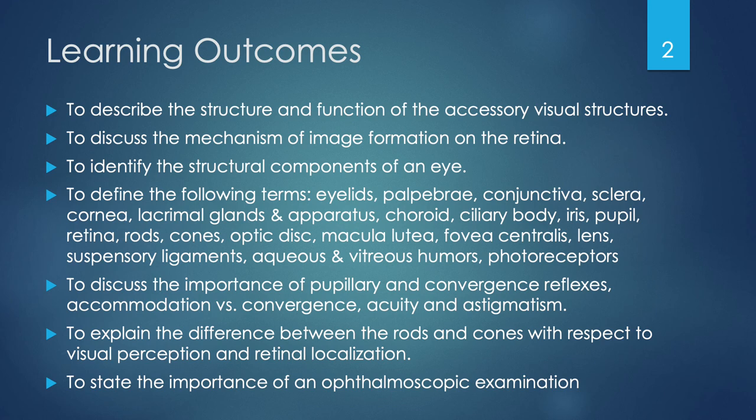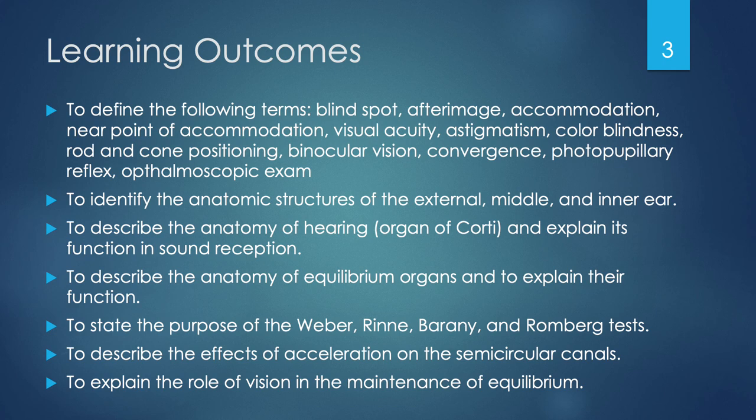Also, to discuss the importance of pupillary and convergence reflexes, to discuss accommodation versus convergence, acuity, and astigmatism, to explain the difference between the rods and cones with respect to visual perception and retinal localization, and to state the importance of an ophthalmoscopic examination. Also, to define the following terms: blind spot, afterimage, accommodation, the near point of accommodation, visual acuity, astigmatism, colorblindness, rod and cone positioning, binocular vision, convergence, and photopupillary reflex.